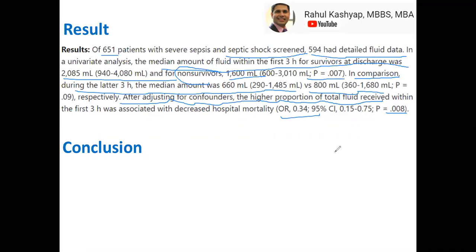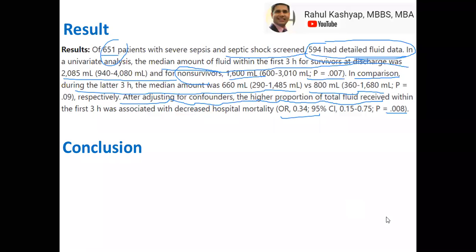If the p-value is less than 0.05, that's typically considered significant. The results section changes based on your specific research question, but the general structure is: start with total patient population, state how many were included in the final analysis, describe the exposure group and control group, then report univariate and multivariate analysis results.